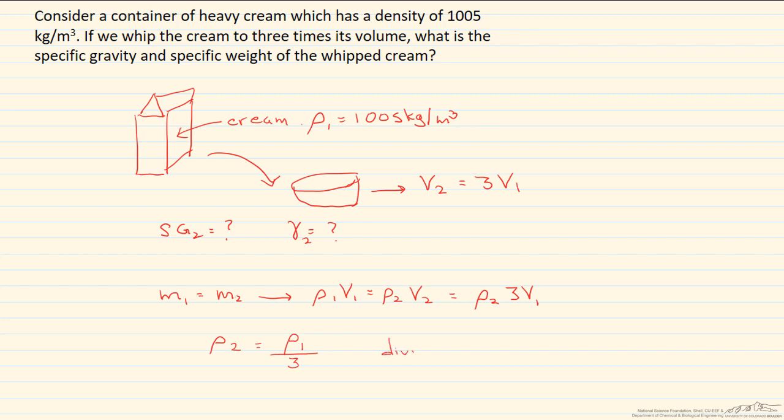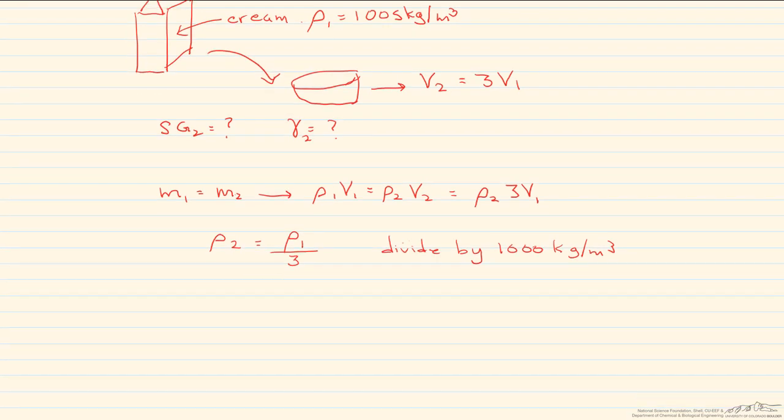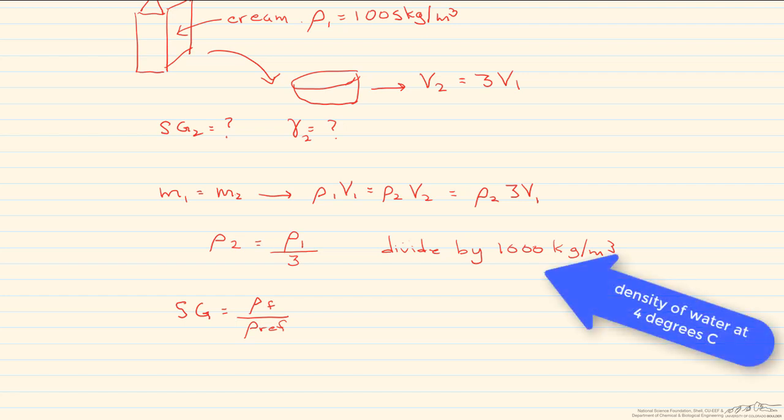And so now, because we're looking for the specific gravity, we're going to divide by the reference density. And the reason we do this is that specific gravity is equal to the ρ of whatever your fluid is divided by the reference density. And our reference density for a liquid or solid is water at four degrees C, which is a thousand kilograms per meter cubed.